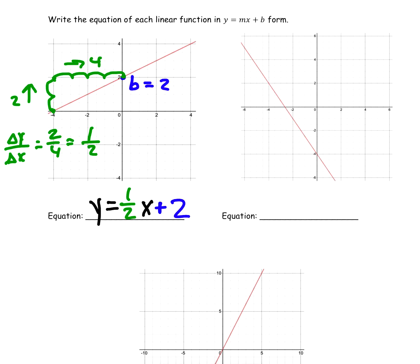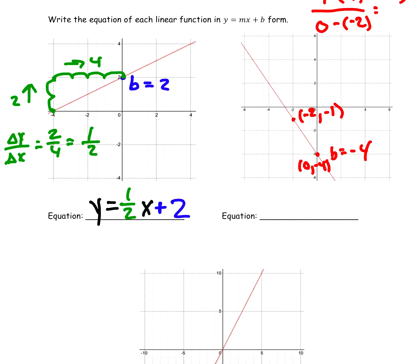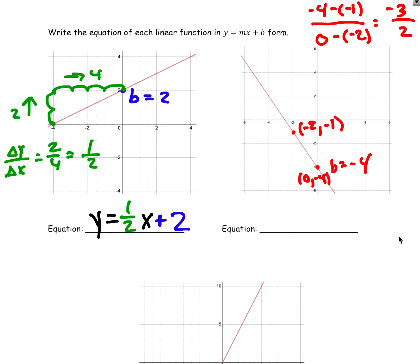For the next graph, my y-intercept is negative 4 — it crosses at negative 4. Finding another nice point on the line, I'll use 0 comma negative 4 and negative 2 comma negative 1. Using y2 minus y1 over x2 minus x1: negative 4 minus negative 1 over 0 minus negative 2 equals negative 3 over 2. That's the slope, and it makes sense it's negative because the line is going down. So my equation is y equals negative 3 over 2 times x minus 4.